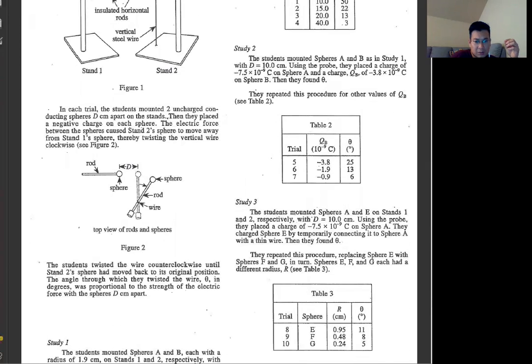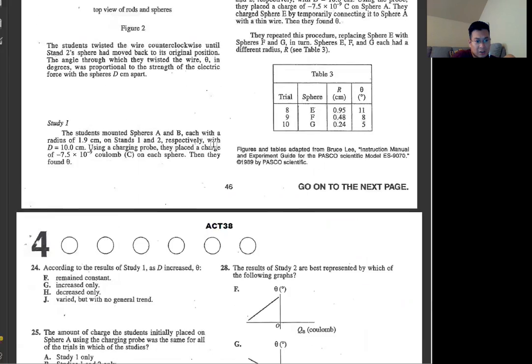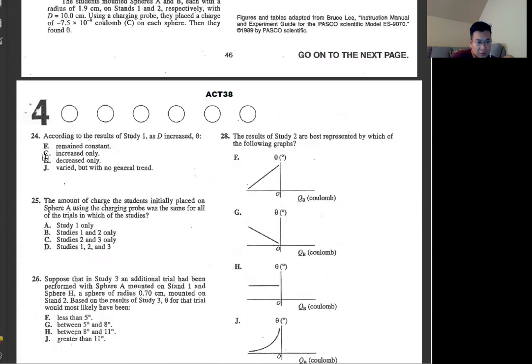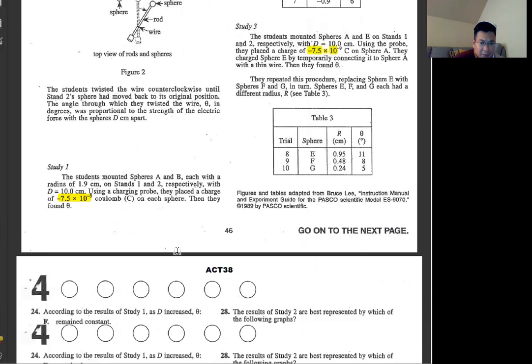Move on to next passage. Question 24, according to the results of study 1, as D increased, theta decreased only. So H. Number 25, the amount of charge the students initially placed on Sphere A using the charging probe was the same for all trials in which studies? The charge we can find in study 1 is minus 7.5, study 2 is also minus 7.5, and study 3 is also minus 7.5. All the same. Which is D.